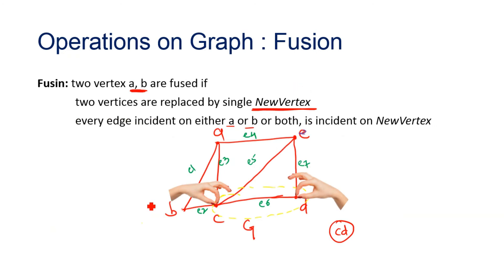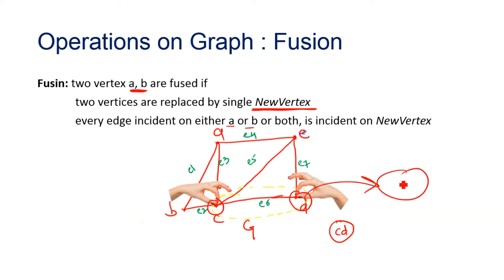The last operation is fusion. Fusion of two vertices creates a new single vertex. Here, two vertices A and B are fused — they are replaced by a single new vertex. Every edge incident on either A or B will now be incident on the new vertex. For example, in this graph we fuse vertices C and D. The new vertex is named CD, and all edges formerly incident on C or D are now incident on CD.